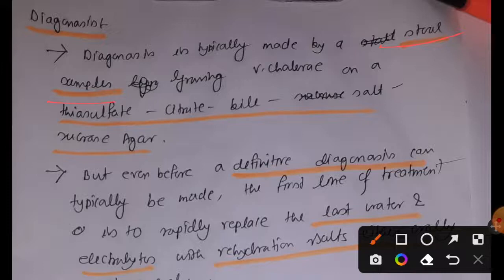culturing stool sample on a thiosulfate citrate bile salt sucrose agar, and then look for the growth of Vibrio cholerae. We can do a diagnostic test by growing stool sample on thiosulfate citrate bile salt sucrose agar.